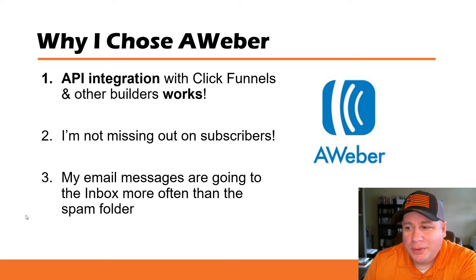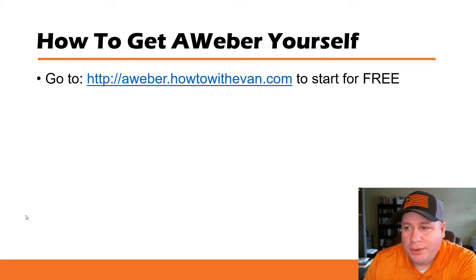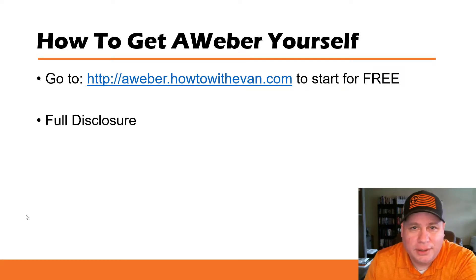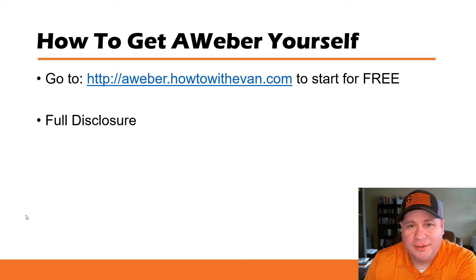That's why I chose AWeber and have slowly been transitioning and getting things moved over. If you want to try AWeber yourself, just go to aweber.howtowitheven.com and you can start for free. They have a completely free plan — you don't even have to pay for it. They do have paid options available which start out at, I think, like $19 a month, which is pretty affordable. Just for full disclosure, this is my affiliate link. You don't have to go there if you don't want to. You can go straight to AWeber's website and start for free. If you go to that link, get AWeber, and decide to upgrade to a paid plan, I'll probably earn a commission.